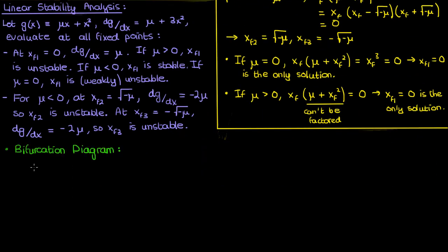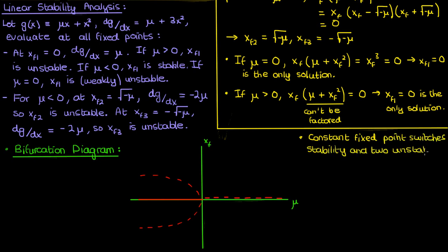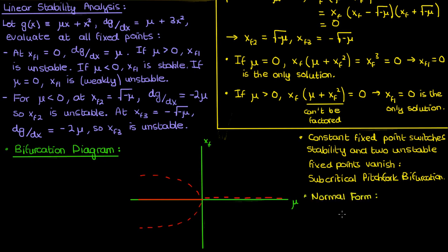Let's now draw the bifurcation diagram for the subcritical case. For positive μ and for μ = 0, we have only one unstable fixed point at 0. For negative μ, the fixed point at 0 becomes stable, but two additional unstable fixed points are created at ±√(−μ). So as we go from negative μ to positive μ, the fixed point at 0 switches stability and two unstable fixed points vanish. This is what defines a subcritical pitchfork bifurcation. Compared to the supercritical pitchfork, the stabilities and the direction the pitchfork faces are both inverted. The normal form is dx/dt = μx + x³.